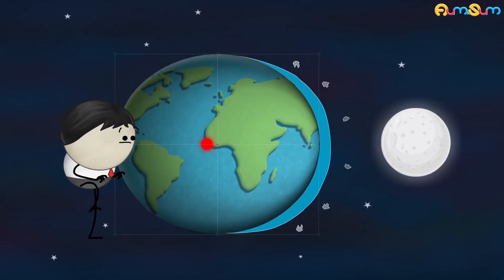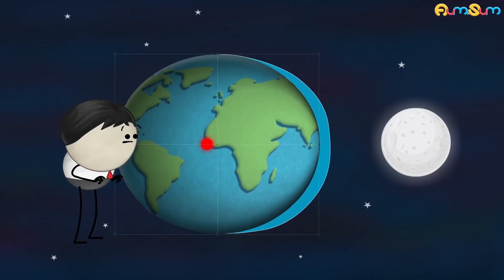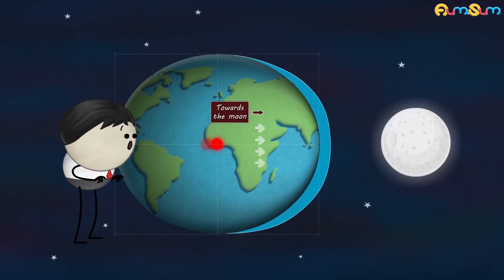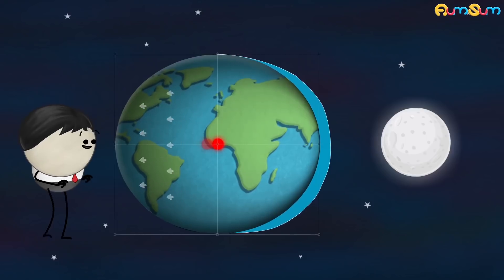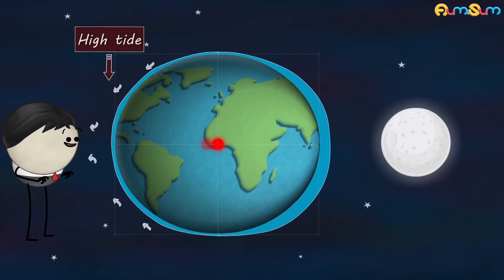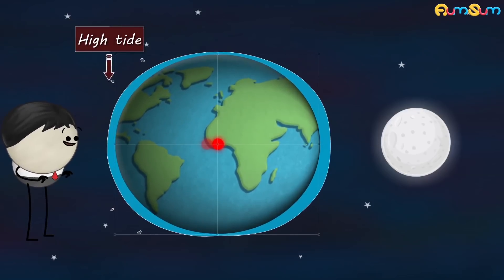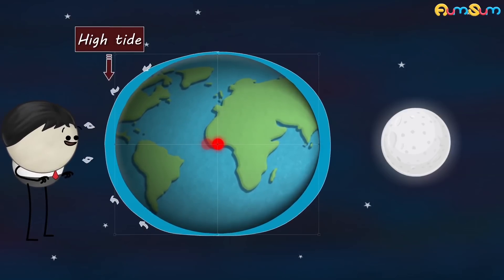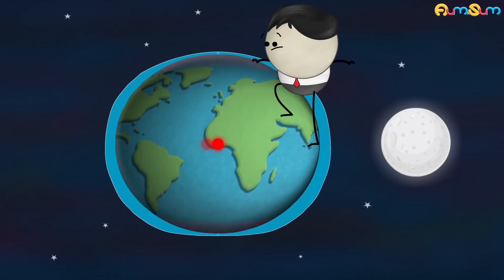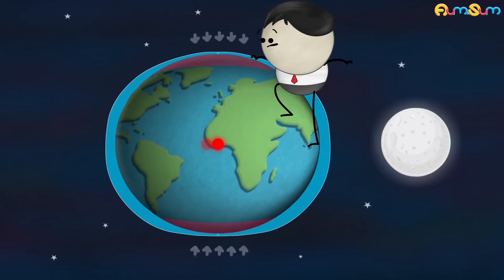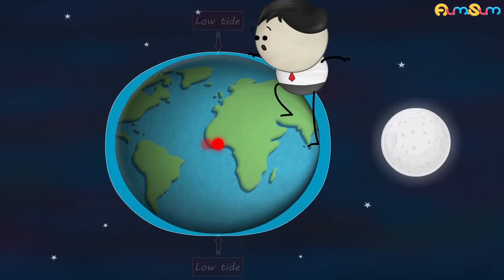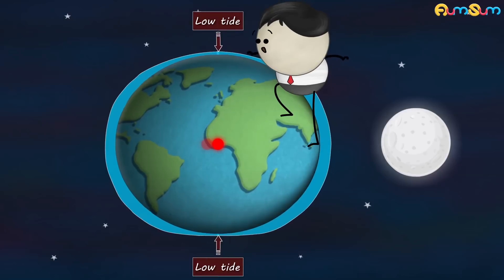Now the earth's center experiences a stronger gravitational force towards the moon than the part facing away from the moon. Hence this part is pulled away from the center, resulting in high tide on the opposite side as well. In addition to this, the places in between the two high tides, where the sea level drops, experience low tides.